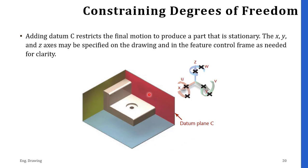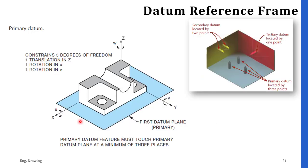Finally, adding datum C restricts the final motion that the part can produce, which is in the X direction. Now the part is stationary. The X, Y, and Z axes may be specified on the drawing and in the feature control frame as needed for clarity. After adding these three datums — primary, secondary, and tertiary — the motion of the part is restricted in any direction or rotational movement. After adding the primary datum, the part is restricted in three degrees of freedom: translation in Z, rotation in U, and rotation in V.